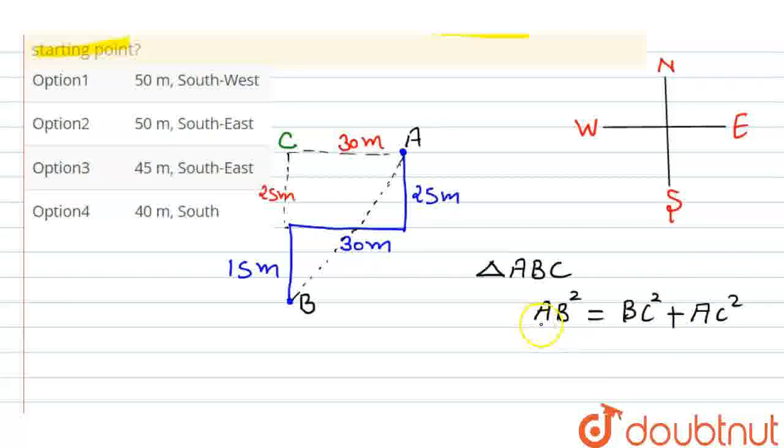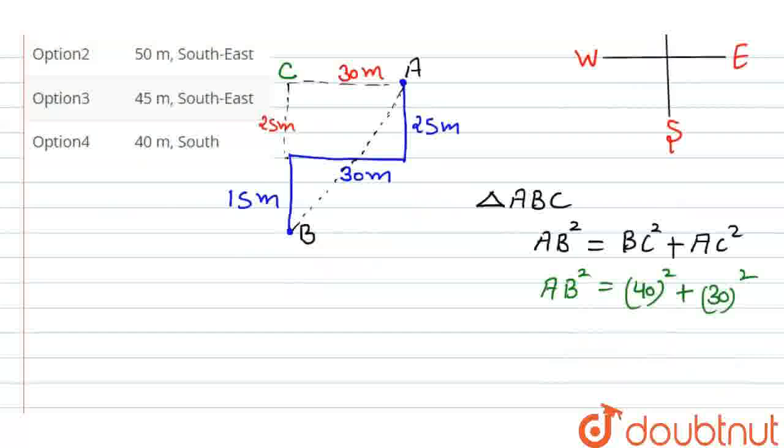Now, simply, if we put the values. AB, we will find out. BC, how much will it be? 15 plus 25, that is 40. So, 40 square plus AC, how much will it be? 30. That means, 30 square. So, how much will it be? 4 times 4 is 16, double zero. Plus 3 times 3 is 9, double zero. Then, how much will it be? Equal to 2500.